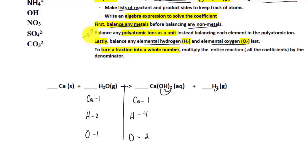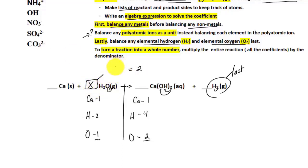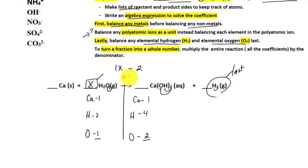Calcium is already balanced. Hydrogen is in elemental form, so we save it for last. We go to oxygen: we have 2 on the product side and 1 on the reactant side. We can set up an algebra expression — 1 times x equals 2 — so x equals 2. We give ourselves a coefficient of 2.